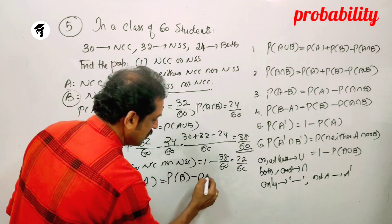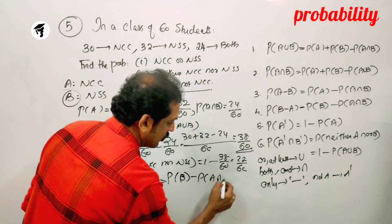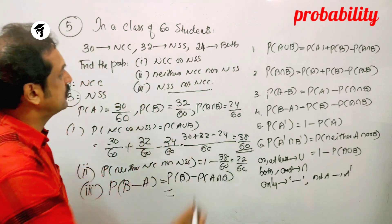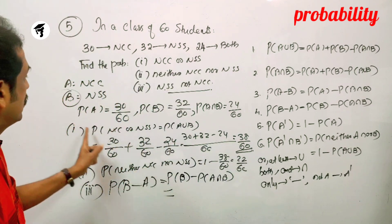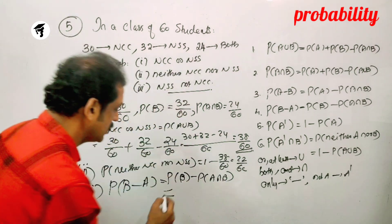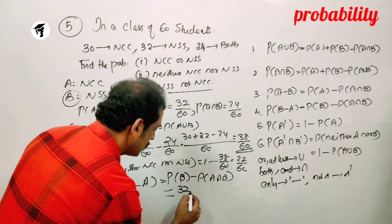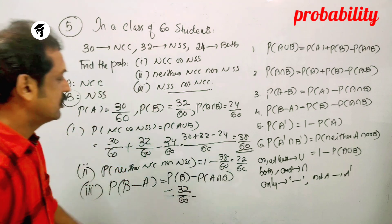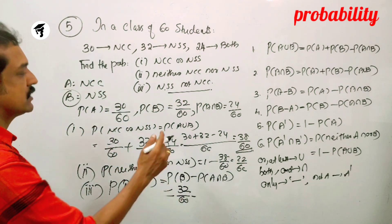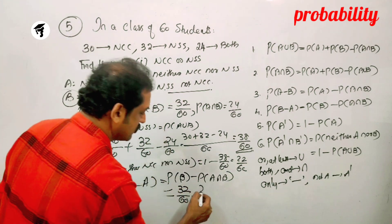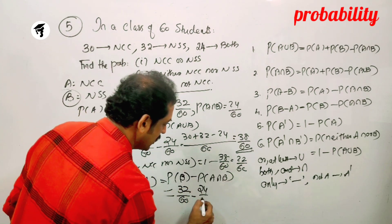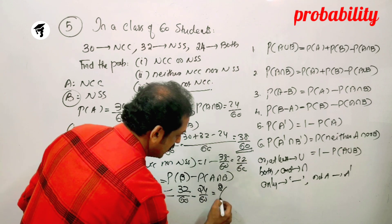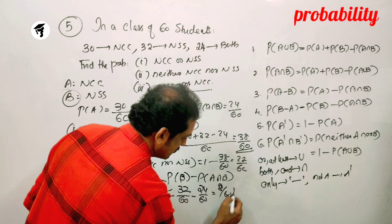For P of B minus A: P of B minus P of A intersection B. P of B is 32 by 60 minus P of A intersection B, which is 24 by 60. The answer is 8 by 60.